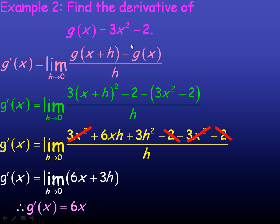So the derivative of 3x squared minus 2 is 6x. That's the derivative formula, and with this function that gives us the derivative at any point.